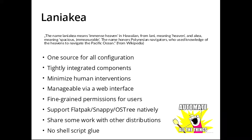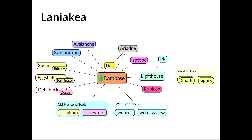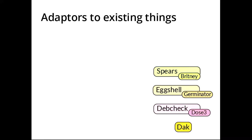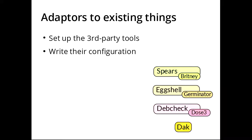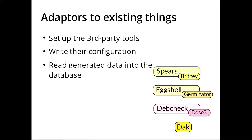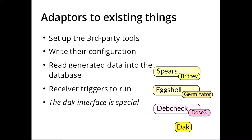Shell scripts are terrible, so this shouldn't happen because it's basically a sign that we did something wrong. This is the basic architecture of the thing. What we have in Laniakea is adapters to existing projects — for example, for the Britney package migration there's the Spears module, and for Germinator which generates meta-packages and checks the installability of packages. These adapters set up these tools so you don't need to care about configuration when you make a new derivative. They write the configuration for them based on information found in the central database, and read data generated by these tools back into the database so it's immediately available for other tools. They receive triggers via ZeroMQ communication in order to run.